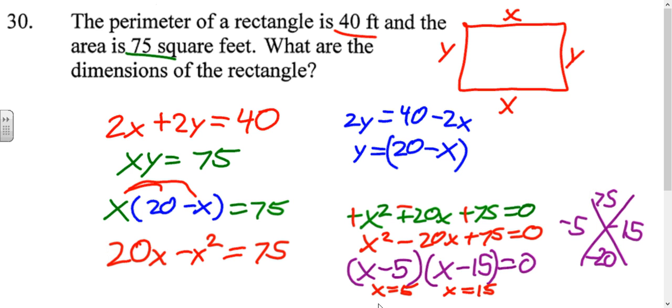And you'll notice that these two numbers work, even though there are two answers for x. If we plug those in, we would just get that y would have to equal the other number. So 5 and 15 are the two numbers that work for multiplying to be 75 for area. And 2 times 5 is 10, 2 times 15 is 30, 10 plus 30 is 40, no matter which way you plug those in. So the dimensions are 5 feet by 15 feet.